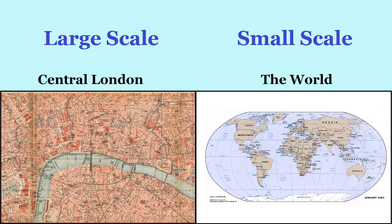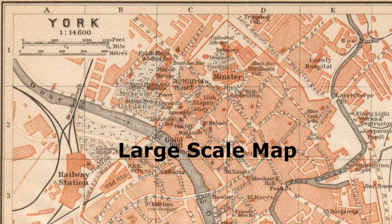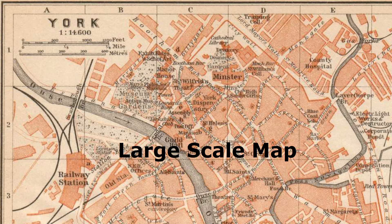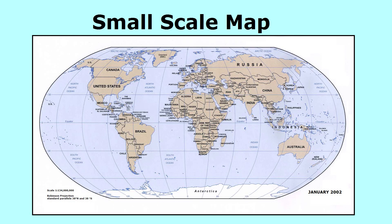Maps are often known as large scale or small scale. Large scale maps are called large scale because features will appear bigger on the map — street maps, for example, are large scale maps. On small scale maps, features will appear smaller. Maps of the world are considered small scale maps.